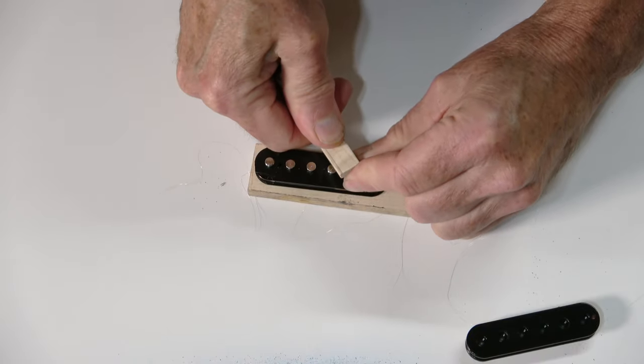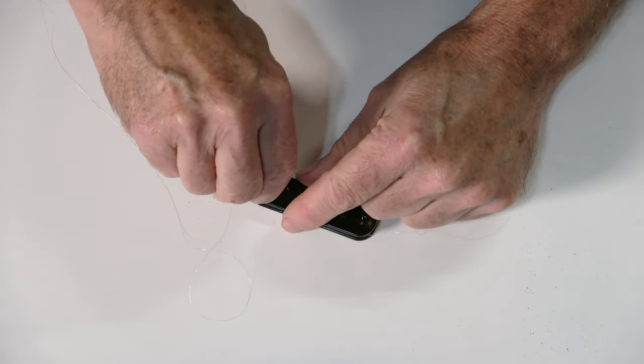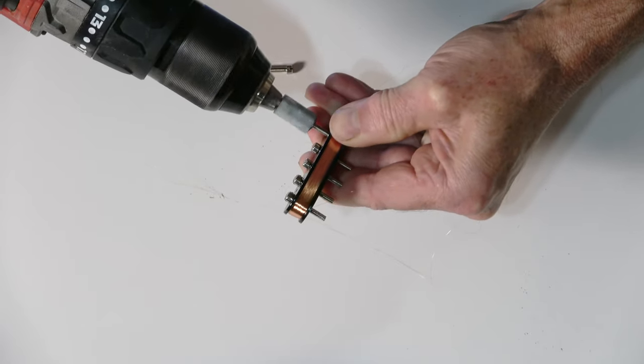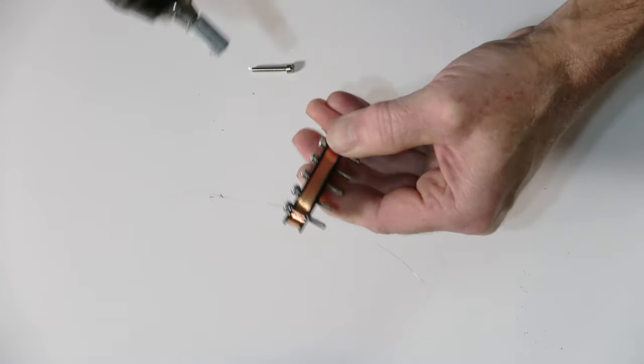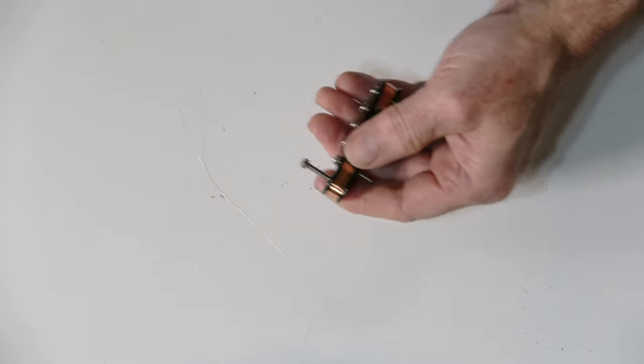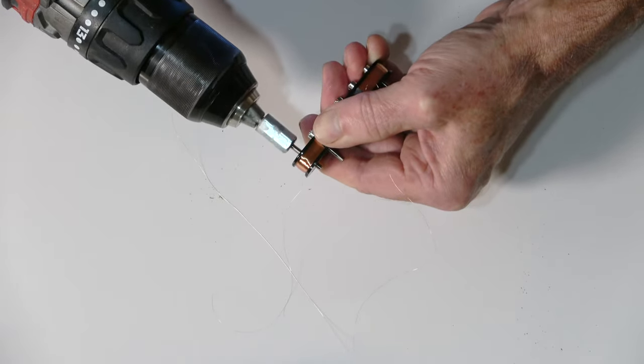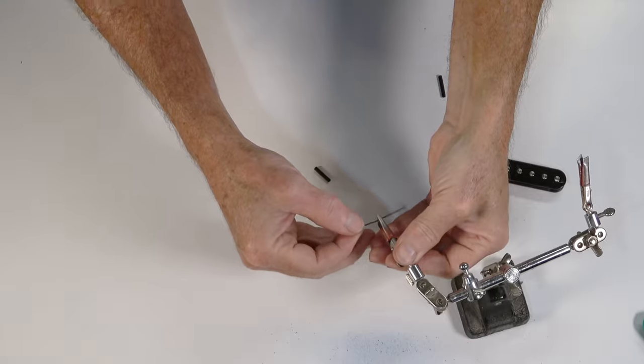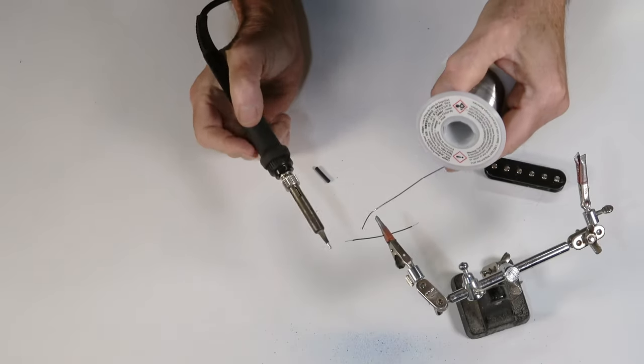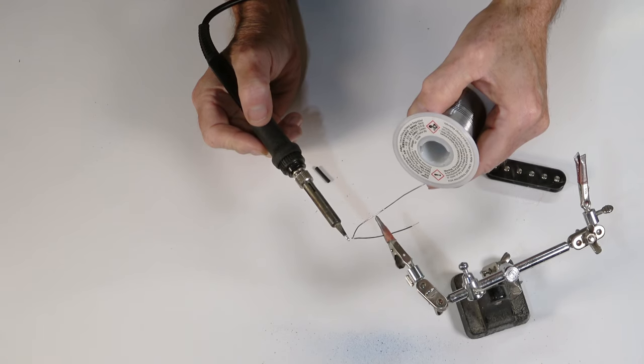Now it's time to start assembling the humbucker, and I began the process by pressing the slugs into the slug bottom. Then using a simple homemade bit chucked into my cordless drill, I was able to install the adjustable pole pieces. Each coil is going to have two lead wires, a black one for the start of the coil, and a red one for the finish, and I pre-tin those with solder in preparation with attaching them to the ends of those leads.